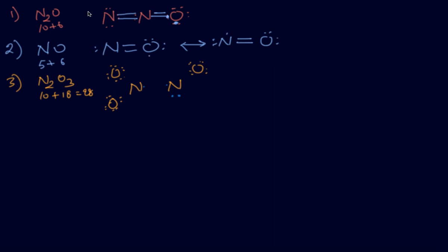I have drawn two structures here. Note that NO is not stable due to an odd electron system, so it will dimerize to give N2O2, in which the octet of nitrogen is complete.